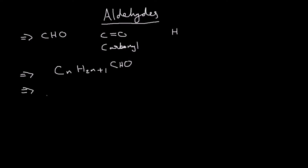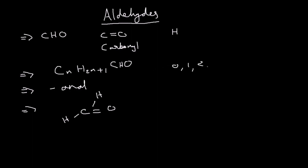The first member of the aldehyde series is methanal. Aldehydes always end in '-anal'. With the general formula, you start substituting from n=0. Substituting n=0 gives H — and then CHO — so the molecular formula of methanal is HCHO. That's the formula of methanal: HCHO.